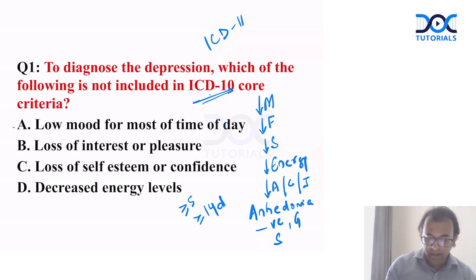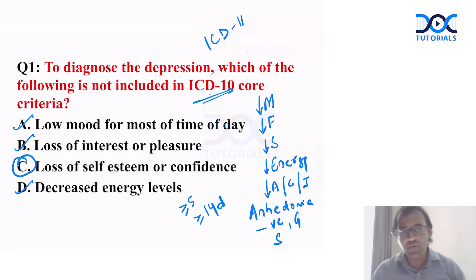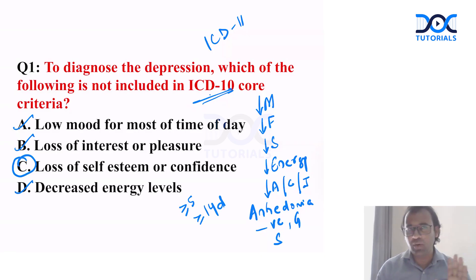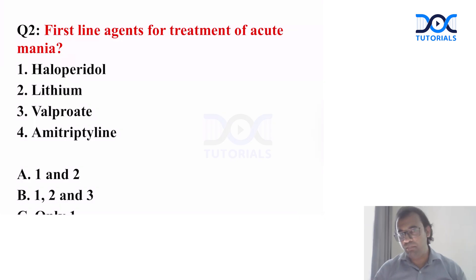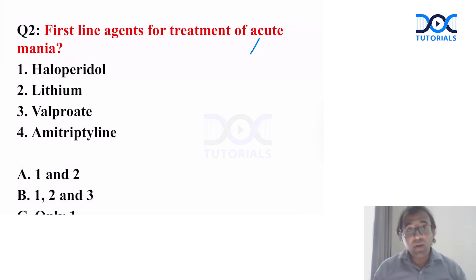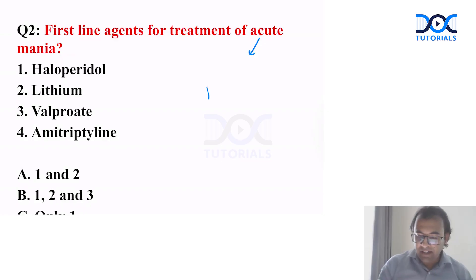We can easily rule out options A, B, and D. Loss of self-esteem or loss of confidence is not a criterion of depression, so the answer is C. Next question: first-line agents for the treatment of acute mania. As we have learned in class, for acute mania we can start with antipsychotics.